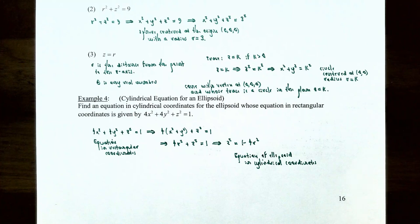This finishes our video on cylindrical coordinates. We talked about how to convert from rectangular coordinates to cylindrical coordinates and back, and how to describe surfaces using cylindrical equations. If you have any questions about any examples in this video or about the homework for this section, please let me know. I'll see you in the next video when we talk about spherical coordinates.